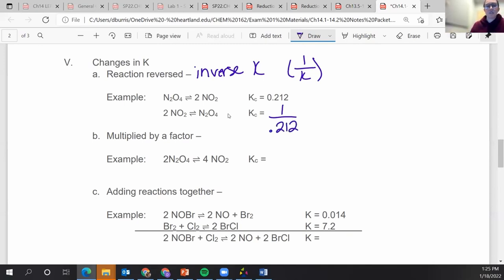Now, if you multiply by a factor—notice this is doubled from the first example—you are actually going to take the K value to that power. So the power of whatever factor you multiplied by. So essentially, this was times 2. You're going to take the K value that we know and square it.